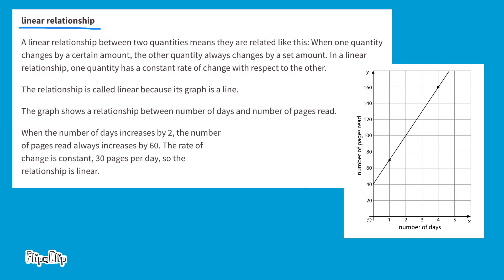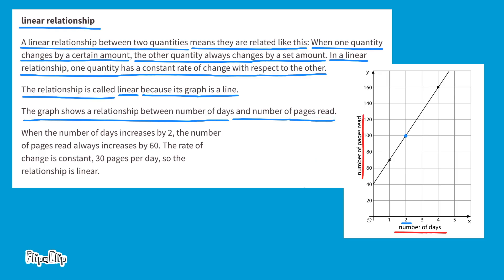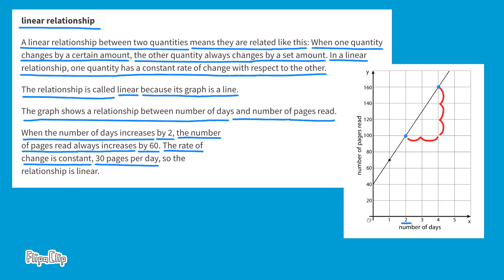Glossary Terms. Linear Relationship: a linear relationship between two quantities means they are related like this — when one quantity changes by a certain amount, the other quantity always changes by a set amount. In a linear relationship, one quantity has a constant rate of change with respect to the other. The relationship is called linear because its graph is a line. The graph shows a relationship between number of days and number of pages read. When the number of days increases by two, the number of pages read always increases by 60. The rate of change is constant — 30 pages per day — so the relationship is linear.